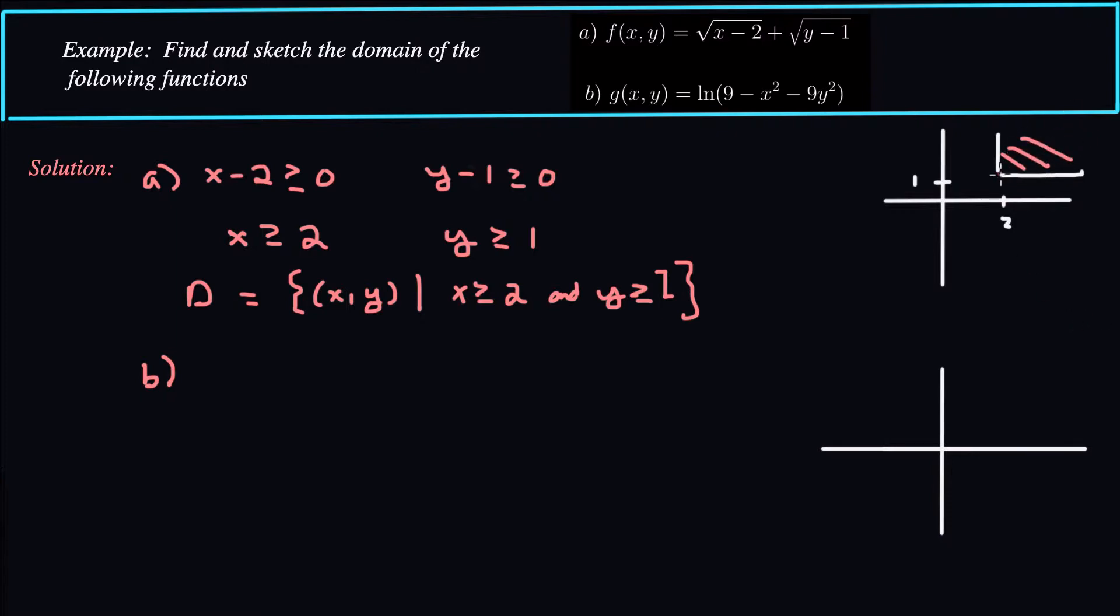And it includes these two lines right here. So this line is included, and this line is included. So this would be our domain, everything above and to the right of these two lines.